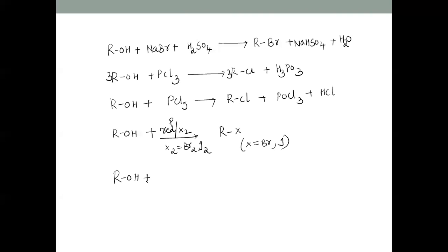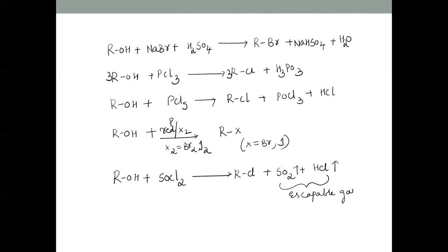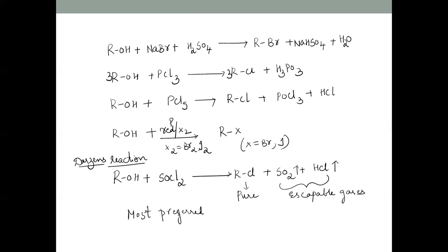Alkyl halides can also be prepared from thionyl chloride (SOCl2). This is the most preferred reaction because the byproducts formed are SO2 and Cl2, both of which are gases that escape into the atmosphere. As a result, we get a pure alkyl halide with no other byproduct remaining.